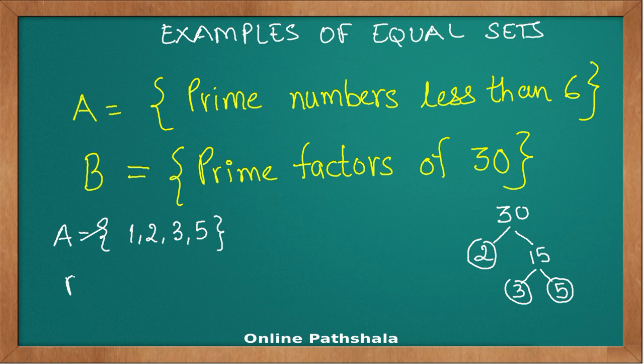Therefore, the set B also has the elements 2, 3, and 5. Now the important thing is, 1 is also a prime factor, right? Because you can always write 1, 2, 3, and 5.